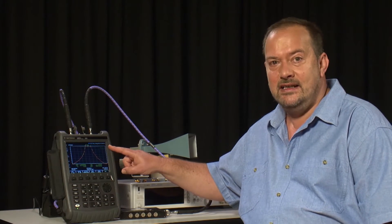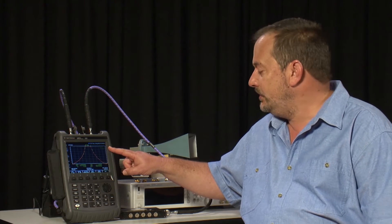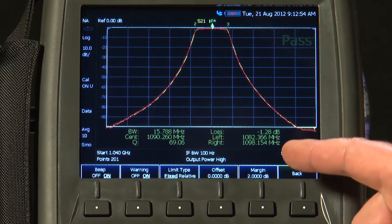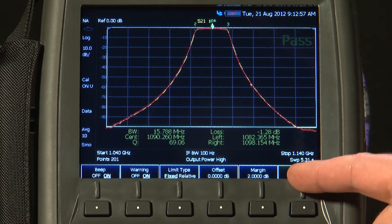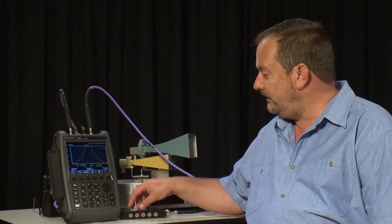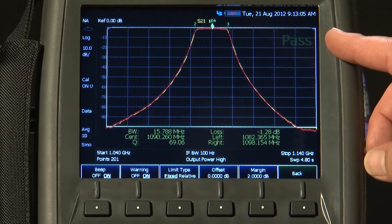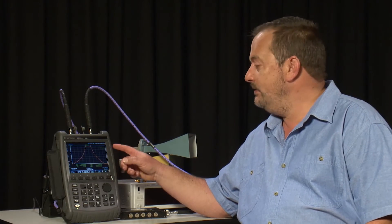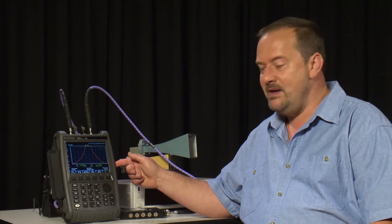But if you have a technician or someone out in the field who has to tune up these filters on a regular basis, you can save these limit line settings, recall that, and then the operator just has to adjust the filter until they get the pass indication on the screen. And, of course, the results can be saved to the internal memory, USB memory stick, or the SD memory card.